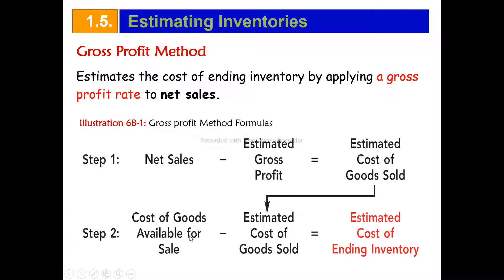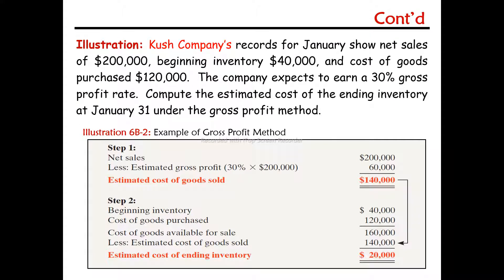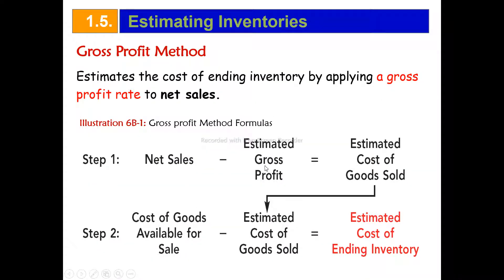For example: cost of goods available for sale equals beginning inventory plus cost of goods purchased. The company requires the following for January: net sales, beginning inventory, and cost of goods purchased. The company has a 37% gross profit percentage. Compute the estimated cost of ending inventory at January 31st under the gross profit method.